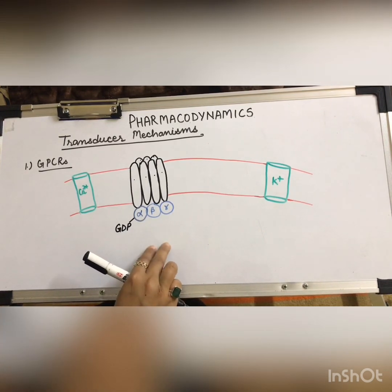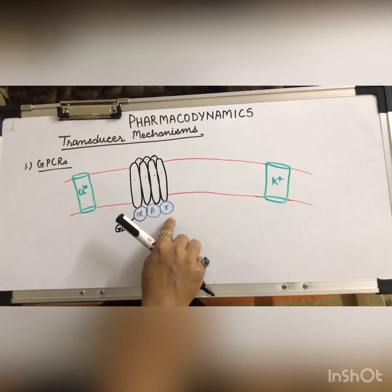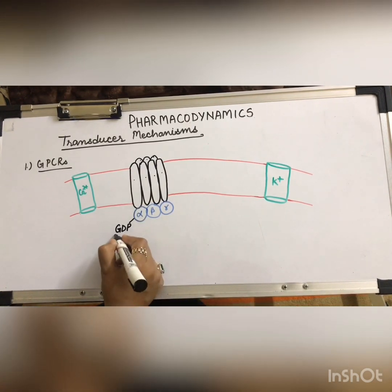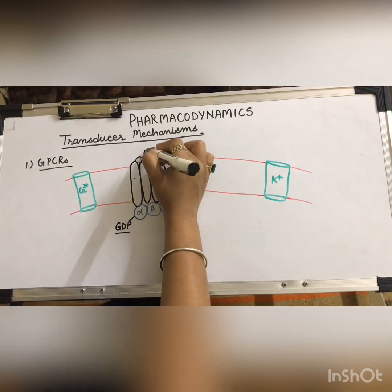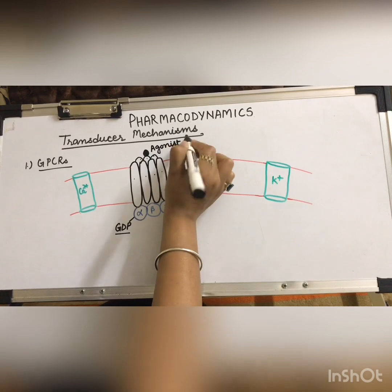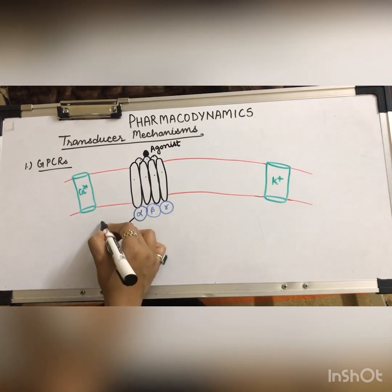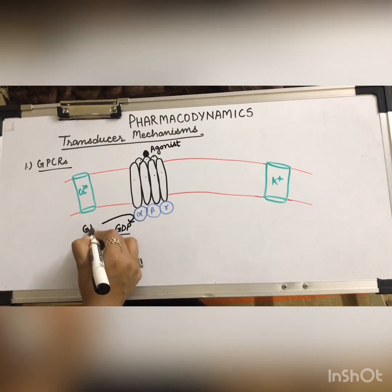The G proteins on the cytosolic side are heterotrimeric in nature, meaning there are three subunits: alpha, beta, and gamma. In the inactive state they are attached to GDP. When an agonist comes and binds to the receptor, these proteins are activated by GTP.